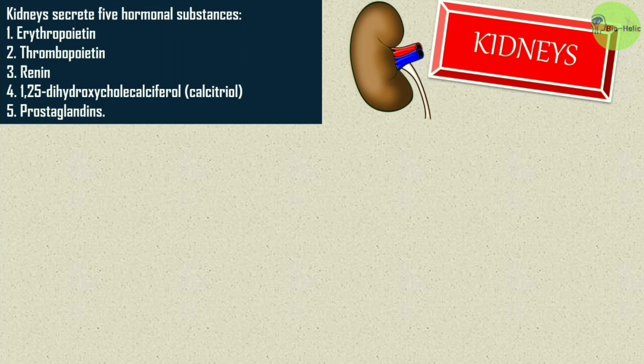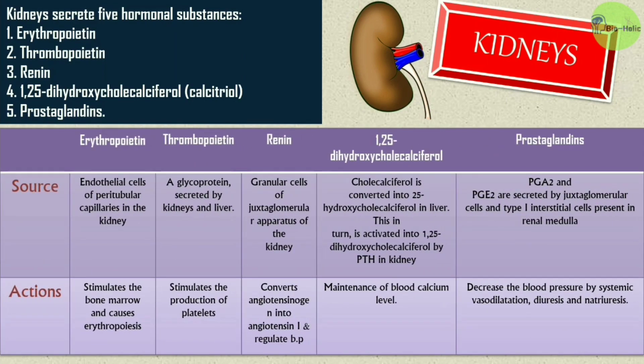The kidneys also secrete five hormones: erythropoietin, thrombopoietin, renin, 1,25-dihydroxycholecalciferol (calcitriol), and prostaglandins. Erythropoietin is secreted from endothelial cells of peritubular capillaries in the kidney and it stimulates the bone marrow, causing erythropoiesis. Thrombopoietin is a glycoprotein secreted by the kidneys and liver; it stimulates the production of platelets.